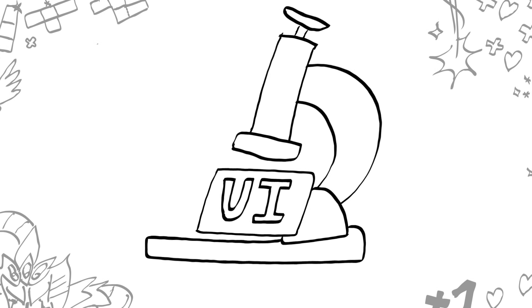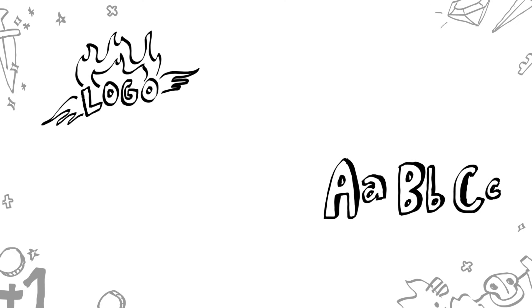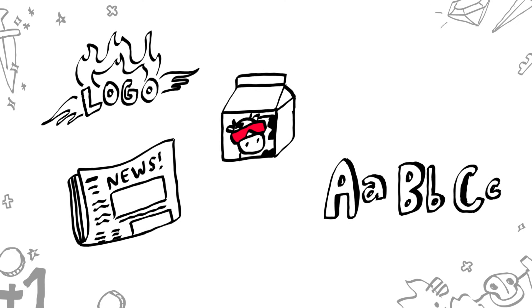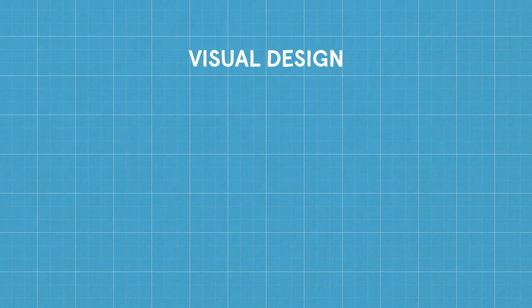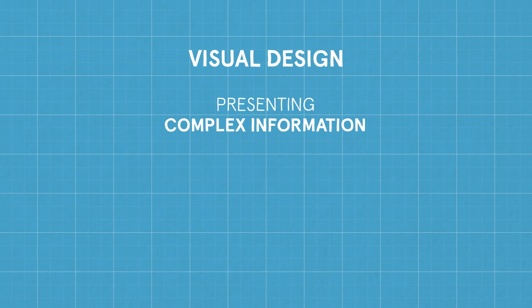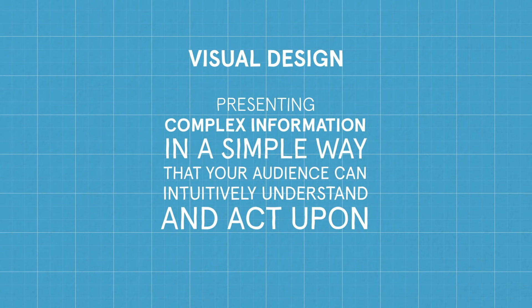Let's get into the nuts and bolts of the craft. UI design follows the guiding principles of visual design. Visual design can refer to many things — logos, typography, packaging, print layout, web design — basically anything that can relate to the aesthetics of a product. But at its core, visual design is about presenting complex information in a simple way that your audience can intuitively understand and act upon.